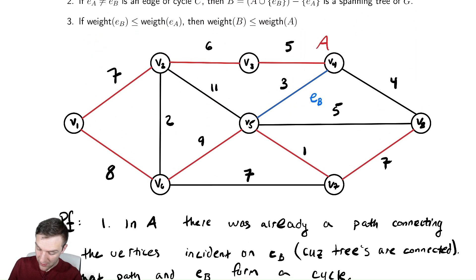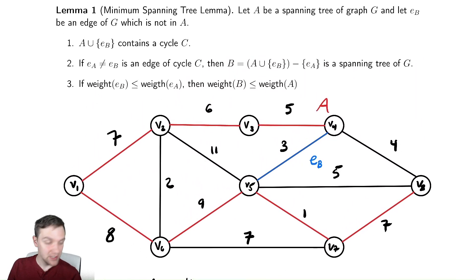So that's part one. So if we were to add E sub B, the thing we indicated in blue there, we would introduce a cycle into the graph. Now, we say if E sub A is not equal to E sub B, and it is part of the cycle, so that's any of these edges that are 5, 6, 7, 8, 9, or 3 with their weights, any of those edges, if we define B to be A when we added in E sub B, and then removed E sub A, then that is also a spanning tree of G. So let's visualize what I mean by that.